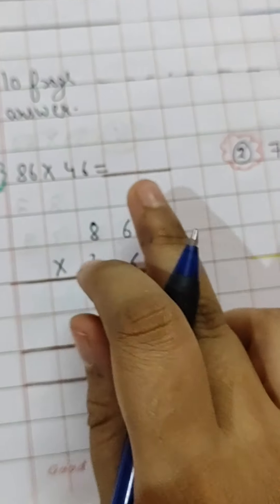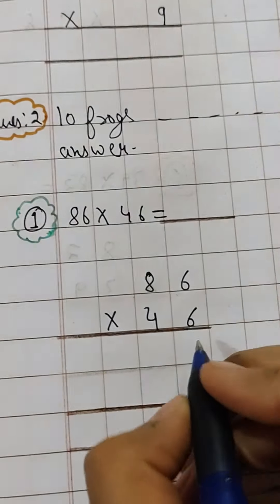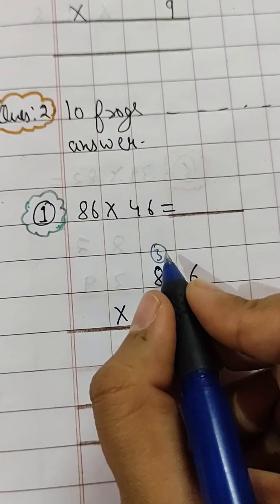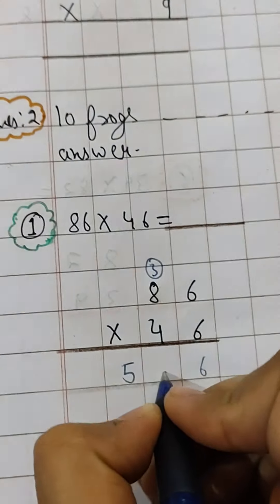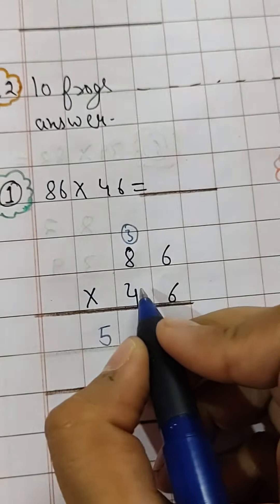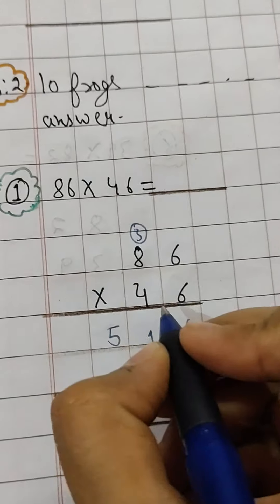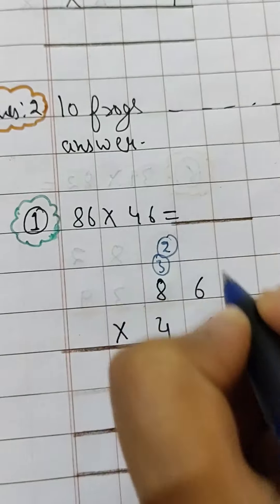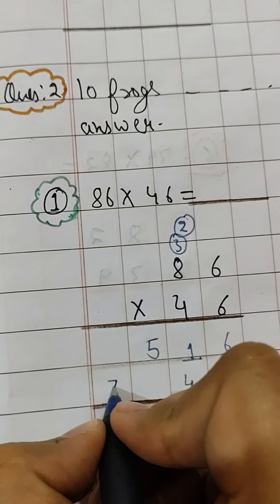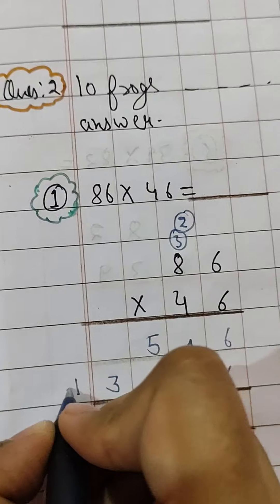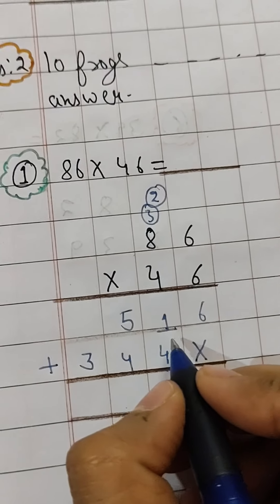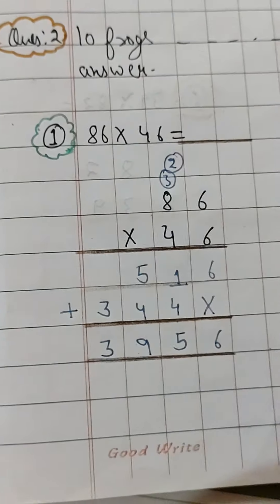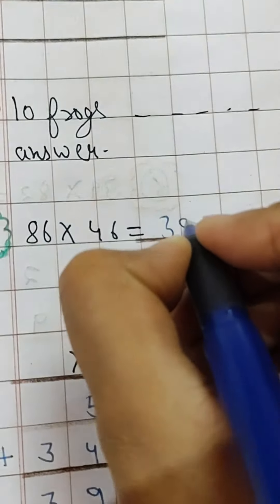Now I have written like this: 86 multiply by 46, first question. 6 times 6 is 36, 3 here, 6 times 8 is 48, 48 plus 3 is 51. Now 4 times 6 is 24, 4 here, 2 here, 4 times 8 is 32, 32 plus 2 is 34. Plus sign. 6 plus 0 is 6, 1 plus 4 is 5, 5 plus 4 is 9, 3 plus 0 is 3. So it will be 3956.